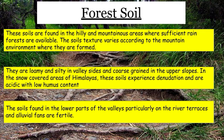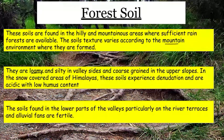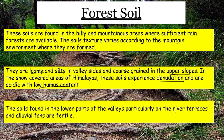The last type is forest soil, also called mountain soil. These soils are found in hilly and mountainous areas. The soil texture varies according to the mountain environment — from loamy and silty in upper slopes to coarse in certain areas. Humus content is low. However, in the lower parts of valleys, river terraces, and alluvial fans, the soil is quite fertile.